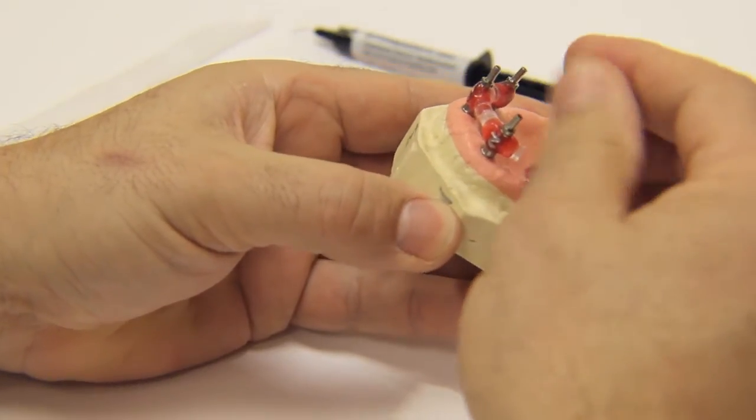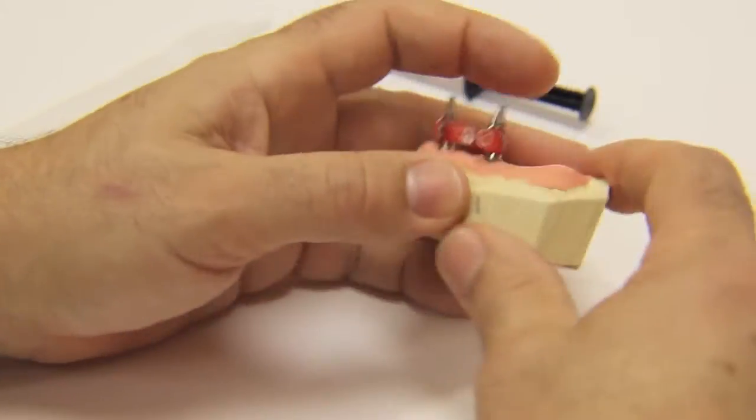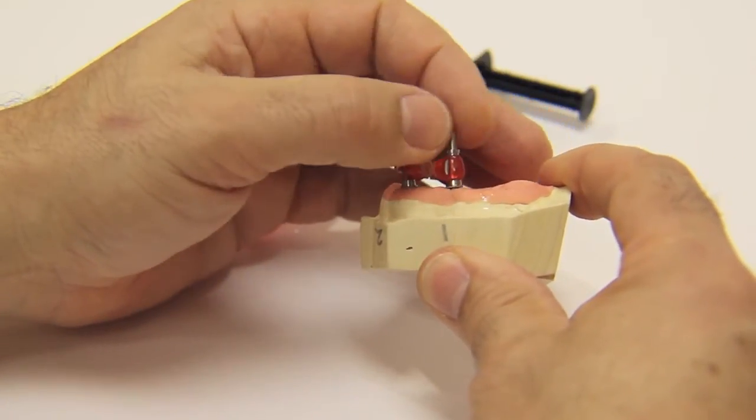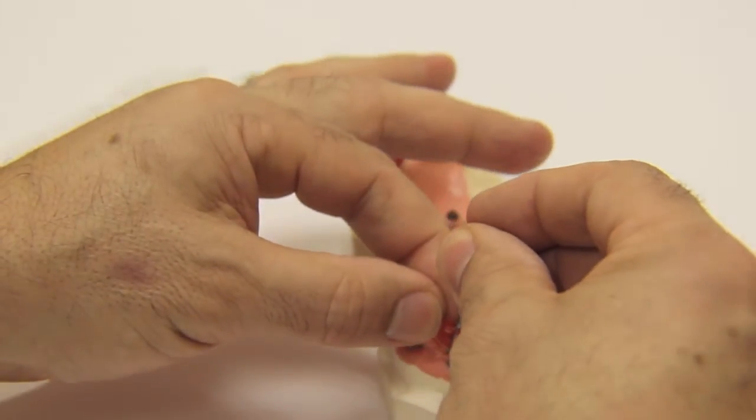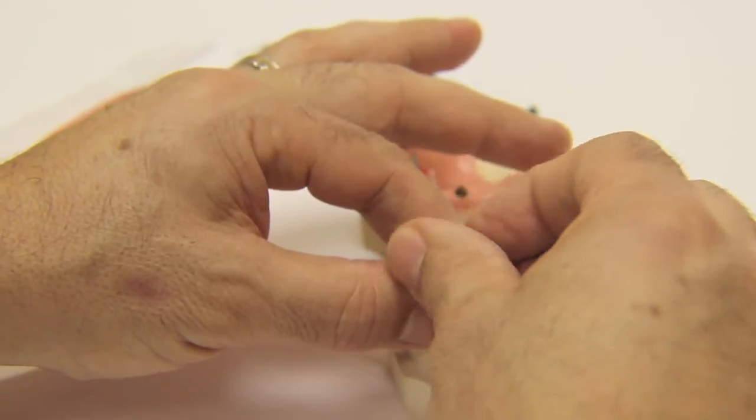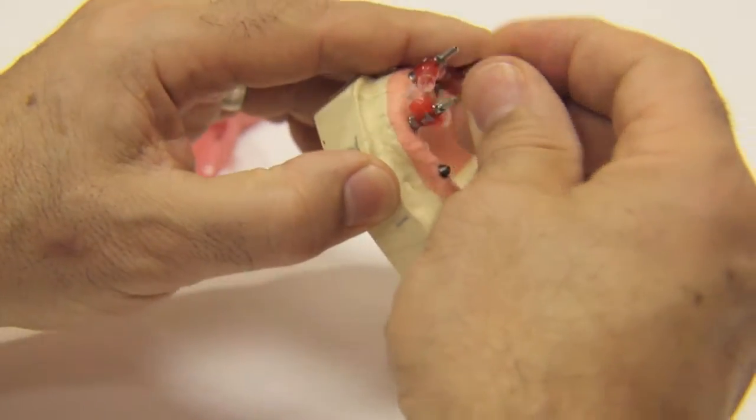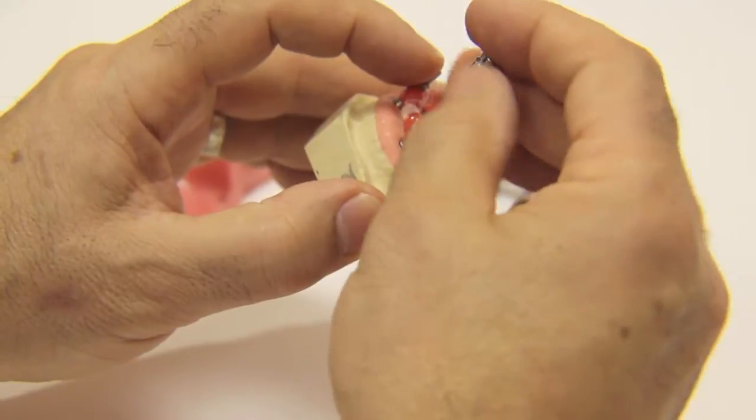After removing the patient's temporary, unscrew the first jig segment from the model and place it in the patient's mouth. Remove segment 2 from the model and place it in the patient's mouth.